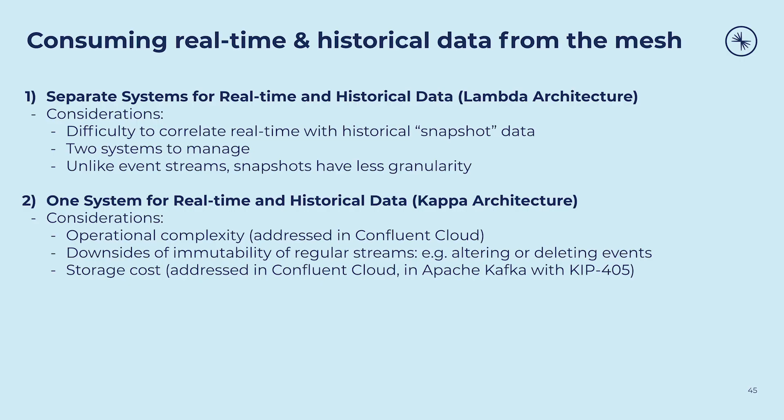Consuming data from the mesh means consuming both real-time and historical data potentially. There are two ways of doing this. The first is the one I described in that trade surveillance example — you get the real-time and historical data separately. This sounds familiar if you're familiar with the Lambda architecture, something that has fallen out of favor in recent years. Here's a system for the historical data, here's a system for the real-time data — so you build it all twice. The solution to this is known as the Kappa architecture.